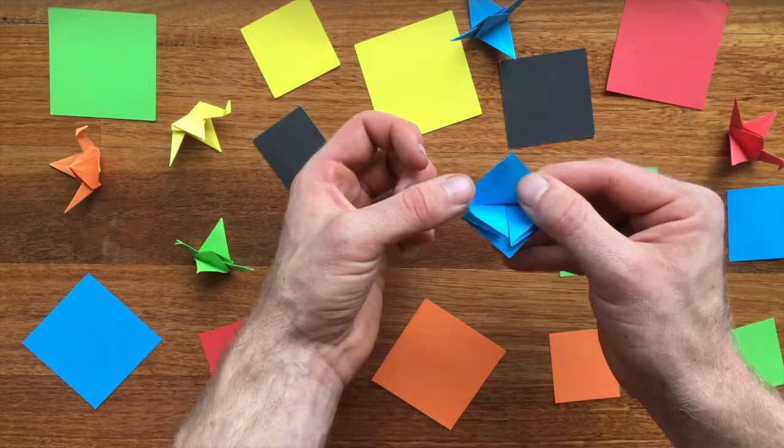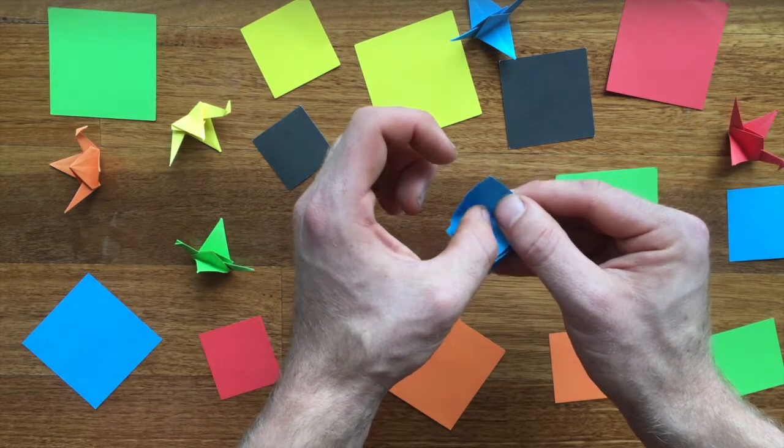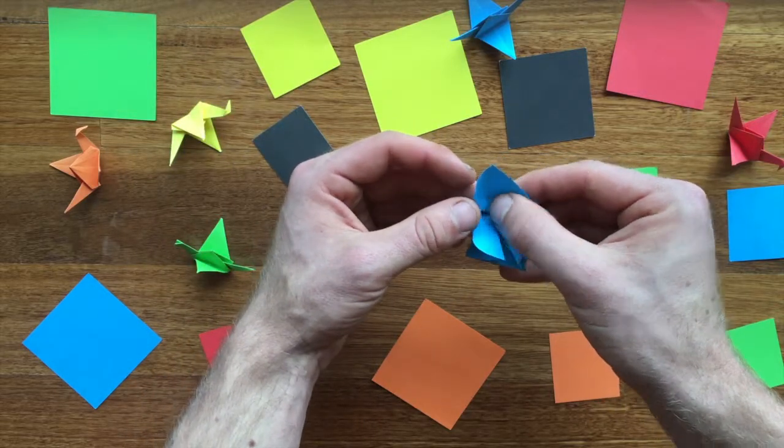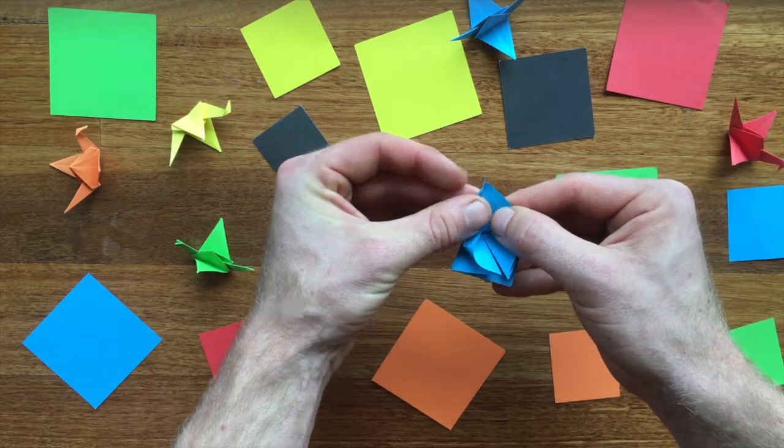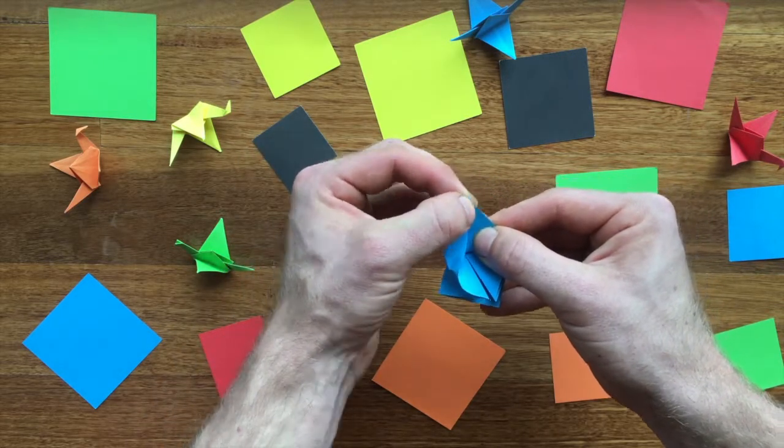This outside edge that I've just traced with my thumb is destined for the inside of this, I guess you could say, flower formation. So the outside edge going into the inside of this flower. There you go.